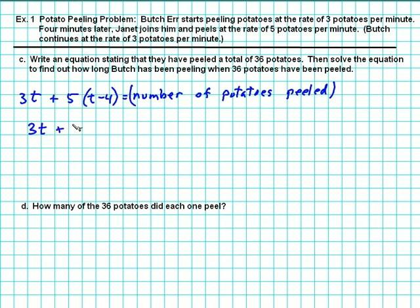3t plus 5 times t minus 4 equals 36. We say we set this equal to 36. So the expression for how many potatoes at time t is set equal to the actual data that we have. So we've written an equation stating that they have peeled a total of 36 potatoes.